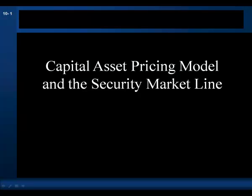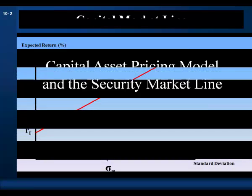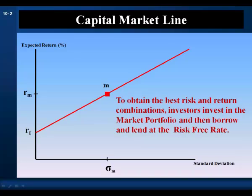The capital asset pricing model and the security market line. According to the capital market line, to obtain the best risk and return combinations, investors invest in the market portfolio and then borrow and lend at the risk-free rate, moving up and down the capital market line to achieve the desired level of risk.